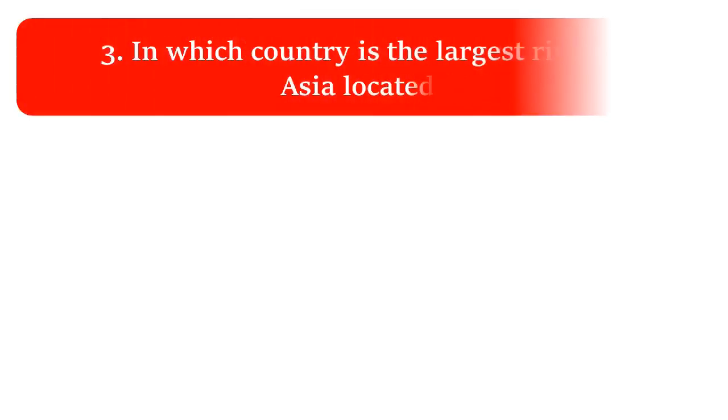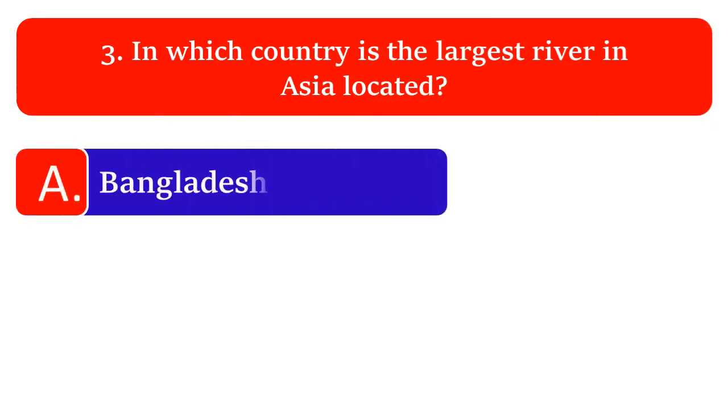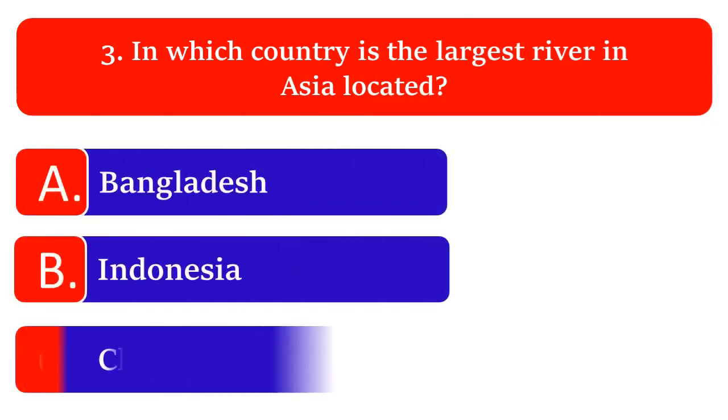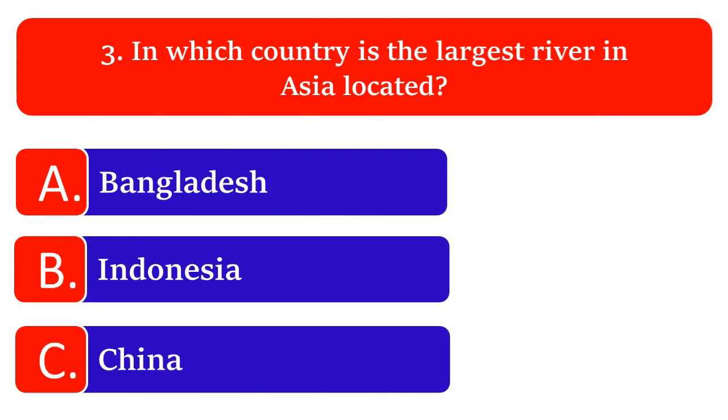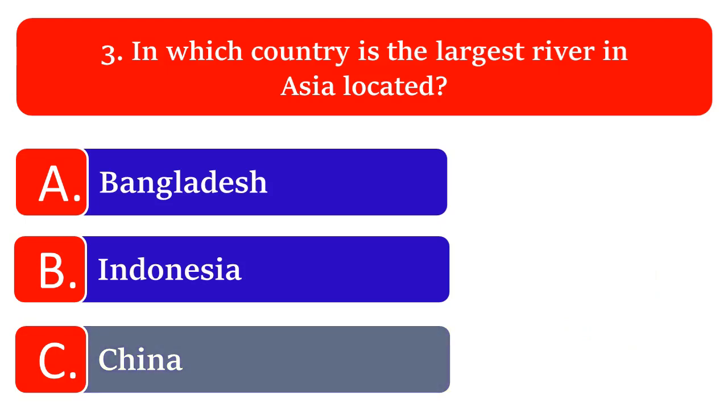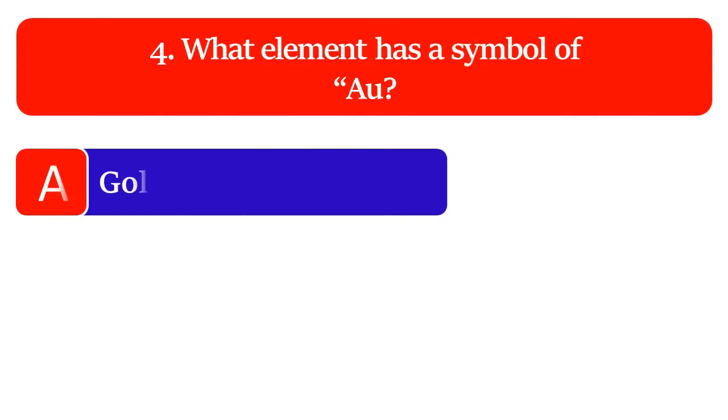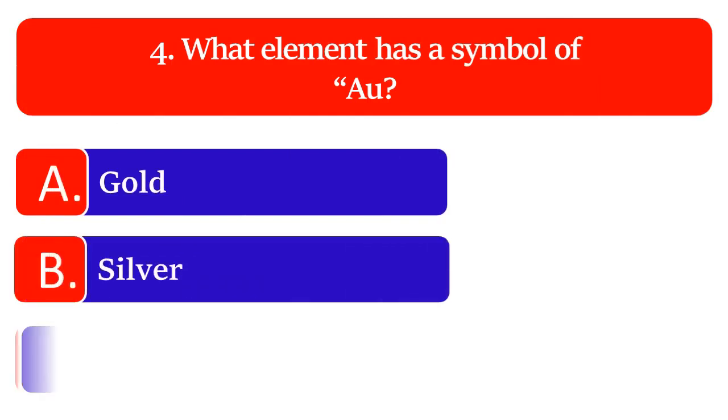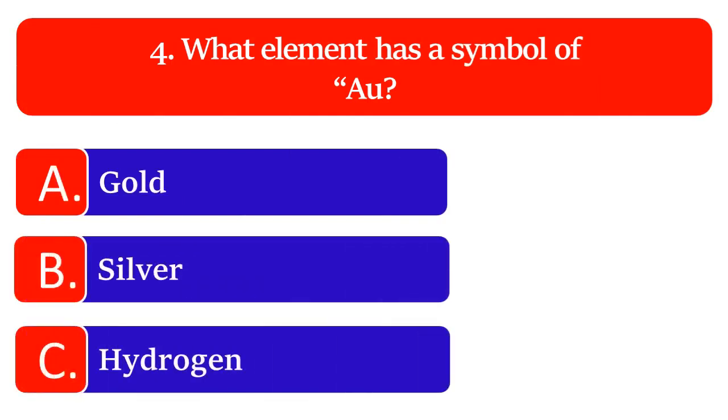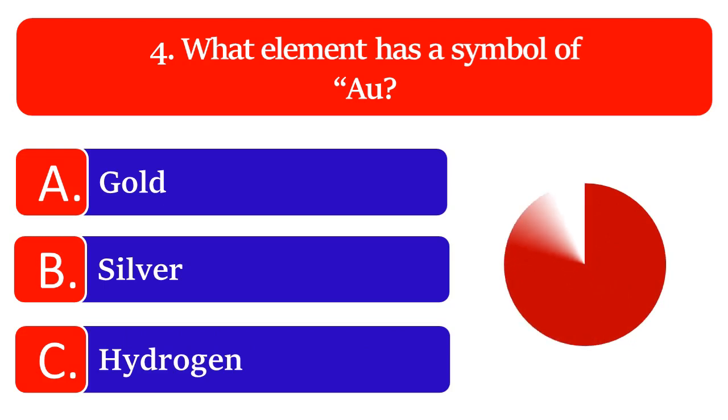In which country is the largest river in Asia located: Bangladesh, Indonesia or China? The great answer is China. What element has a symbol of AU: gold, silver or hydrogen? The great answer is gold.